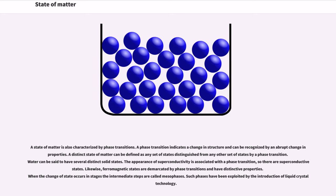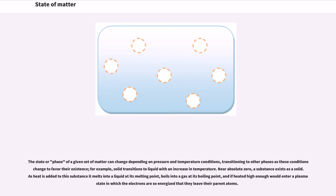When the change of state occurs in stages the intermediate steps are called mesophases. Such phases have been exploited by the introduction of liquid crystal technology. The state or phase of a given set of matter can change depending on pressure and temperature conditions, transitioning to other phases as these conditions change to favor their existence, for example, solid transitions to liquid with an increase in temperature. Near absolute zero, a substance exists as a solid. As heat is added to this substance it melts into a liquid at its melting point, boils into a gas at its boiling point, and if heated high enough would enter a plasma state in which the electrons are so energized that they leave their parent atoms.